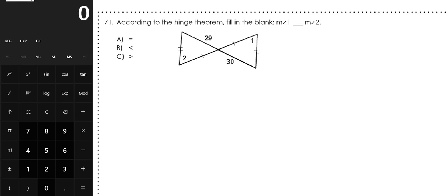Page 15, number 71. According to the Hinge Theorem, fill in the blank. We're comparing the measure of angle 1 to the measure of angle 2.